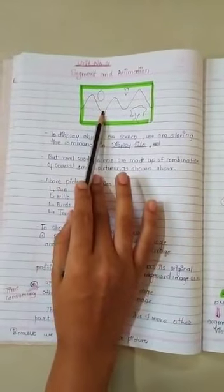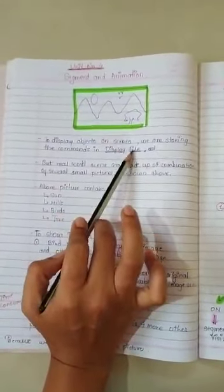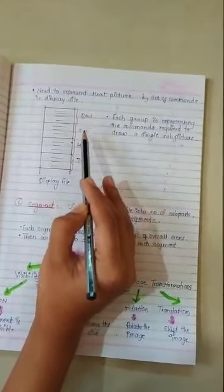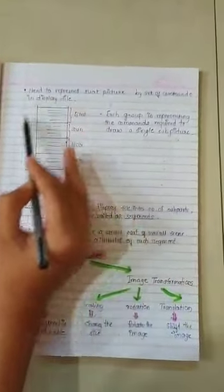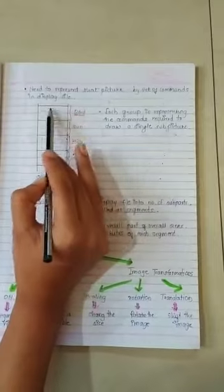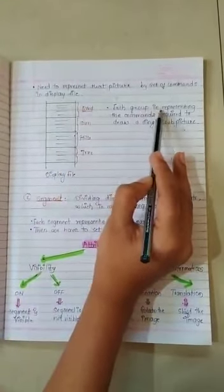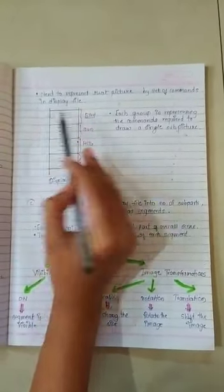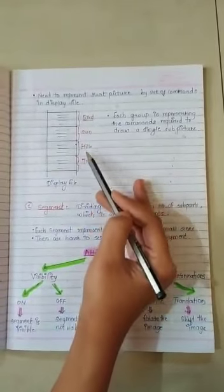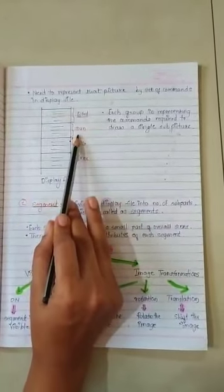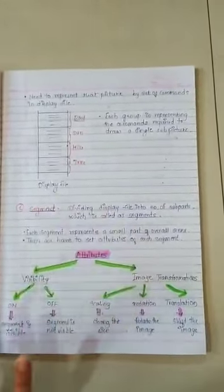But how can these different objects be stored into a single display file structure? That is where the segment is introduced. We have four different parts, and I am storing these four different parts into one display file. The single part representing all the instructions of the bird is one segment. So a group of commands representing the bird is a single segment. We have four segments for bird, sun, hill, and tree — each representing the grouping of commands required for each object separately.